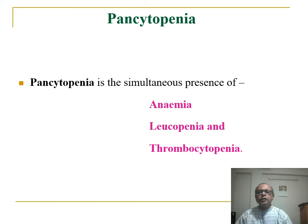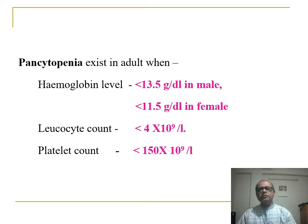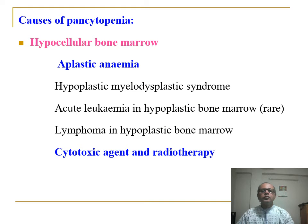What is pancytopenia? This is the simultaneous presence of anemia, leukopenia, and thrombocytopenia. Pancytopenia exists in adults when there is a hemoglobin level less than 13.5 g/dL in males and less than 11.5 g/dL in females, leukopenia count less than 4×10⁹ per liter, and platelet count less than 150×10⁹ per liter.